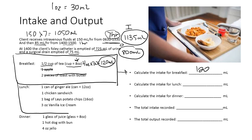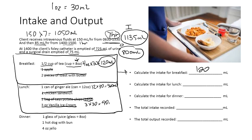For lunch, the patient drank a whole 12-ounce can of ginger ale: 12 times 30 equals 360 mL. The chicken sandwich is not a liquid and is not counted. However, the patient also had 3 ounces of ice cream — since it melts at room temperature, it counts: 3 times 30 equals 90 mL. Total lunch intake: 360 plus 90 equals 450 mL.